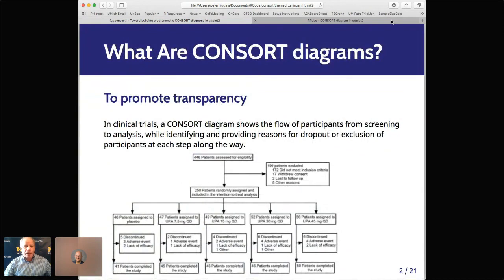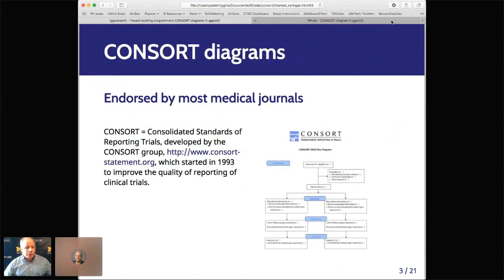So for those of you who don't know, consort diagrams are to promote transparency in reporting of clinical trials and basically start with the patients assessed for eligibility and follow them through each step in the trial from randomization, completion, dosing with drug. And anytime someone doesn't complete, you have to provide the reasons why they didn't complete the study. And this was developed in 1993. The most recent version in 2010 is now the standard for reporting clinical trials. There is a website. There is a standard diagram in RTF template. But that's about it.